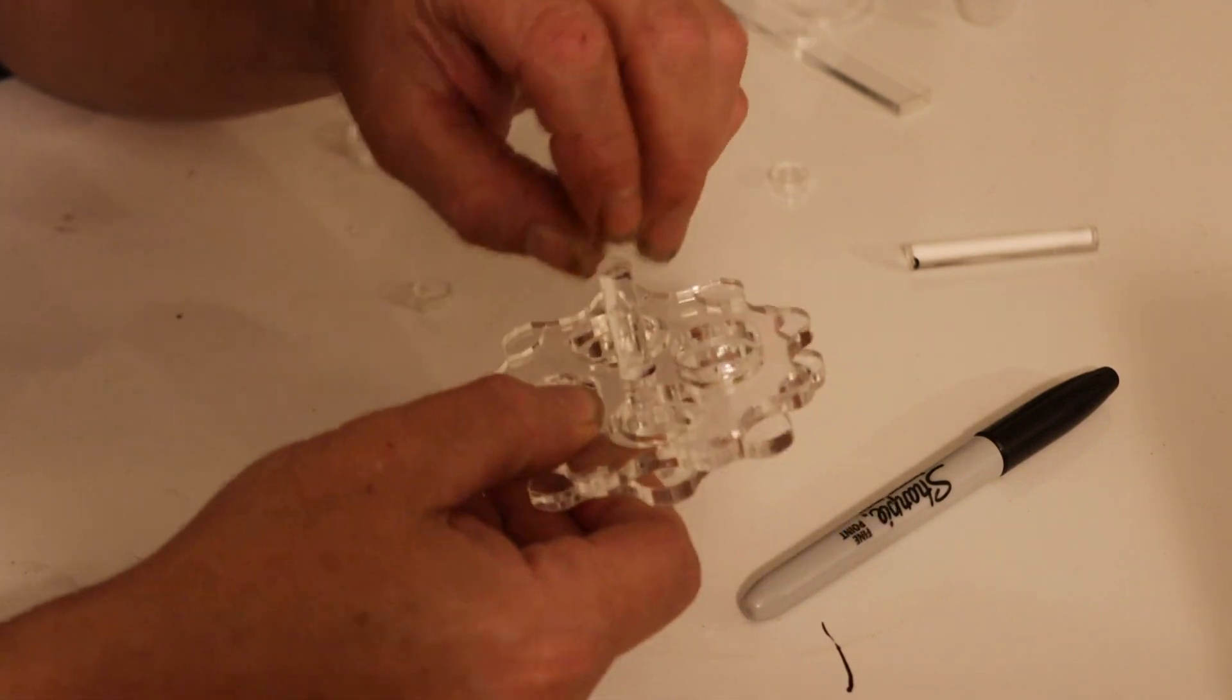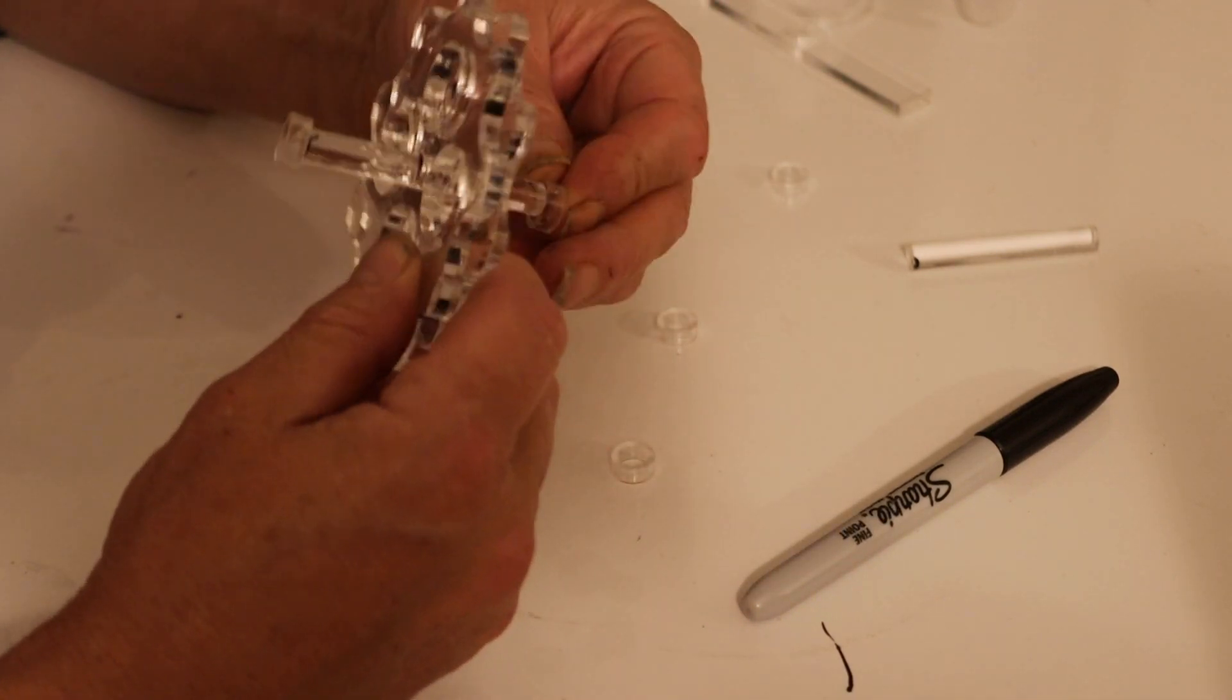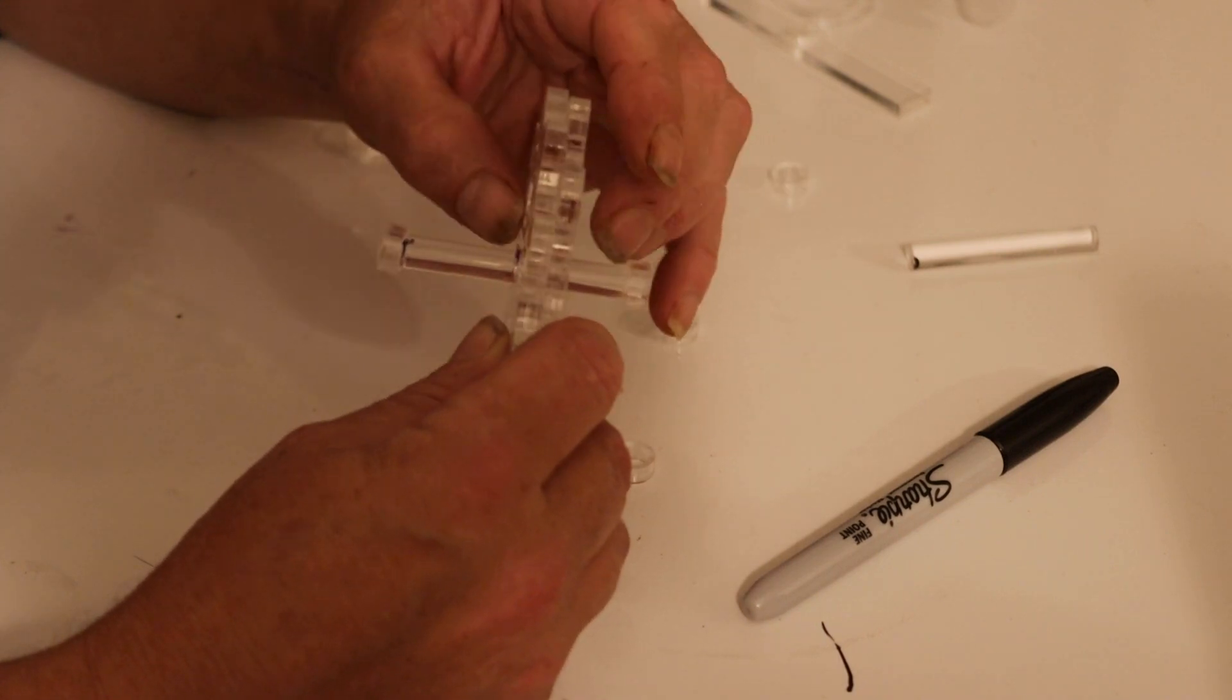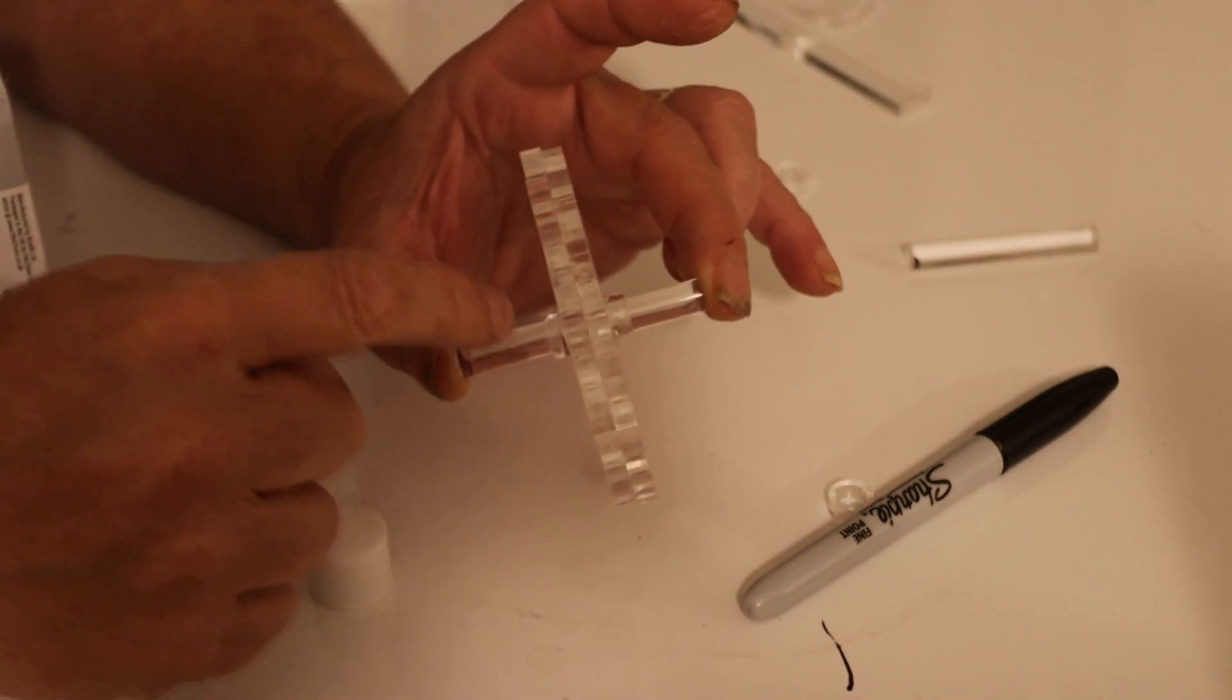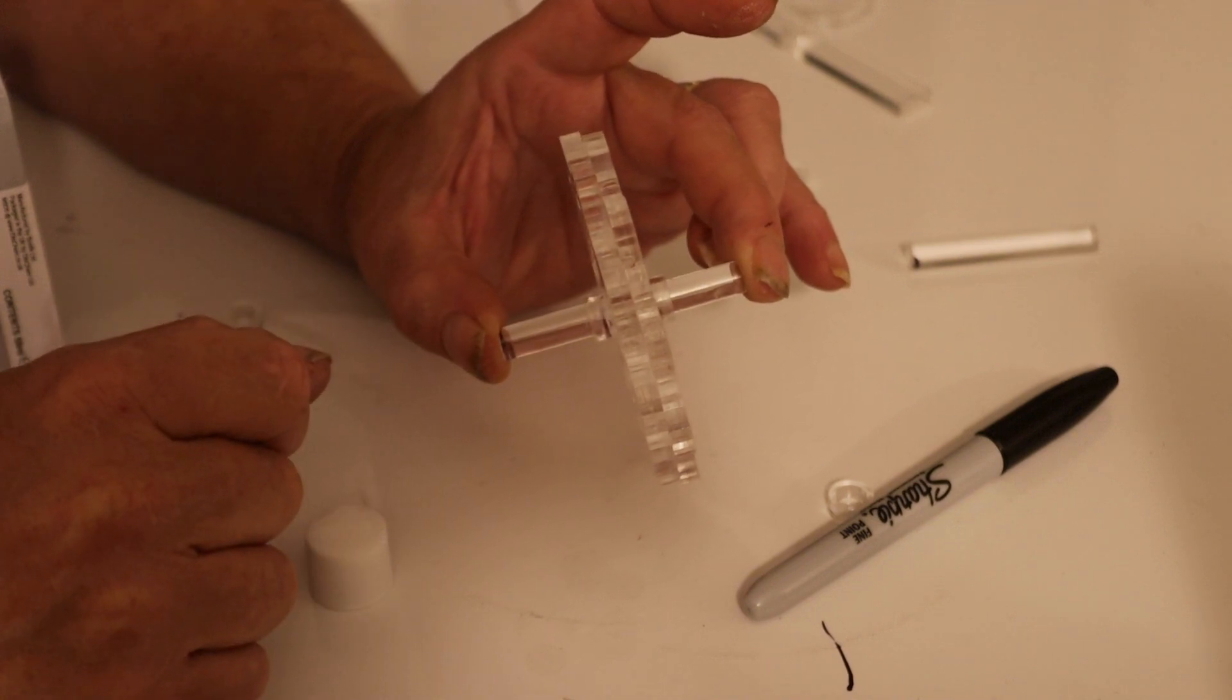And then we take one spacer each here and glue them on one side there and the other side there, pushing them flat against here. So it's like that. The spacer is tight against that gear and then we leave them to dry.